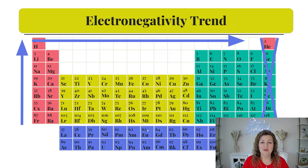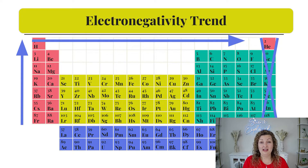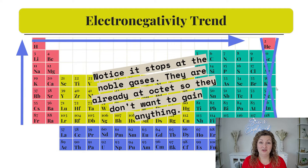We do have a trend on the periodic table, and the trend is going to be increasing in electronegativity as we go up and over to the right. In other words, we can draw an arrow pointed up to the right-hand corner — it would mean the same thing. Notice that there is a big X through the noble gases, because the noble gases do not have electronegativity. Why? Because they have a full octet already. They have no reason to have attraction for an electron — they're already full and have no need for any more electrons.